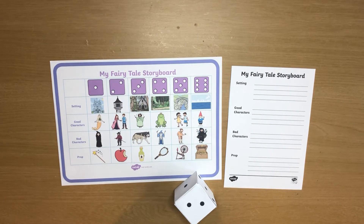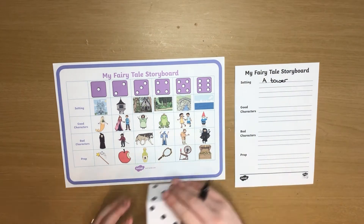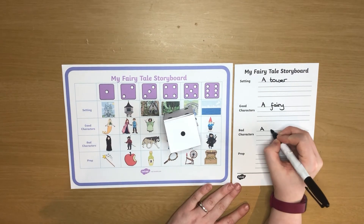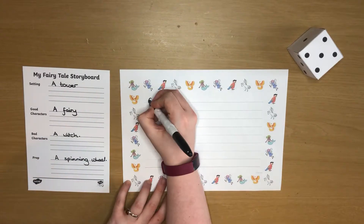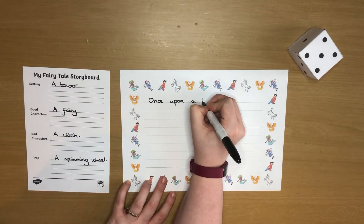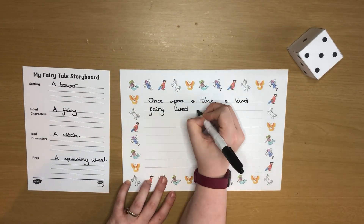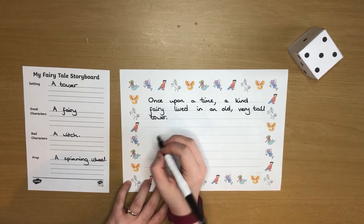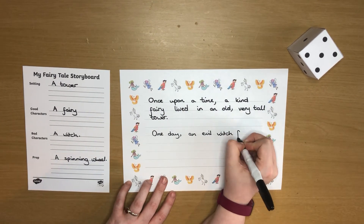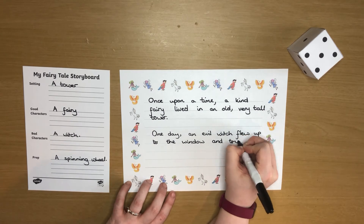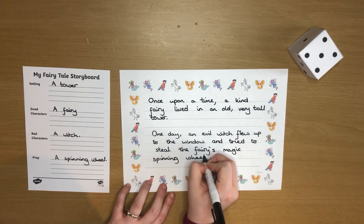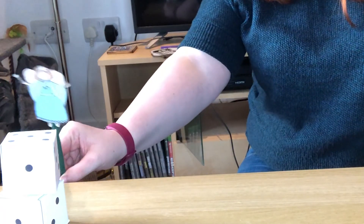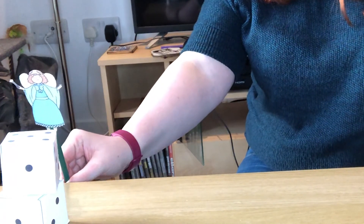Why not use a dice game to generate ideas for exciting creative writing? This dice game helps children to put together an outline for a fun fairy tale story. The randomness of the process helps children to focus more on accurate and engaging writing, rather than having to think of all the ideas for their story themselves. To extend this learning, why not act out your story using these cute stick puppets?